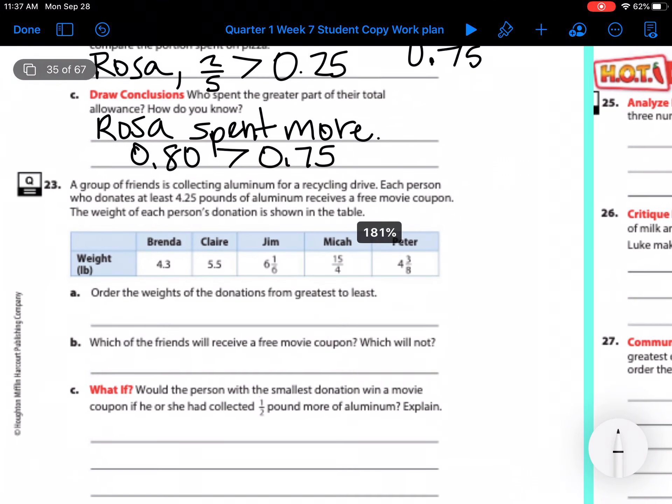So that was the first problem. Let's look at 23. A group of friends is collecting aluminum for a recycling drive. Each person who donates at least 4.25 pounds of aluminum receives a free movie coupon. The weight of each person's donation is shown in the table. So we have 4.3, 5.5, 6 and 1 sixth, 15 fourths, and 4 and 3 eighths. Order the weights of the donation from greatest to least.